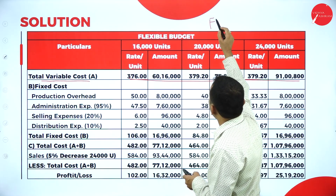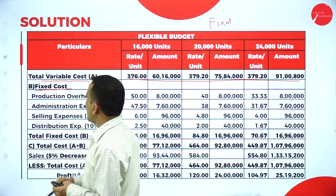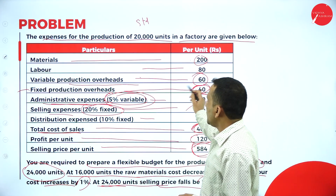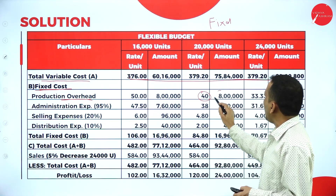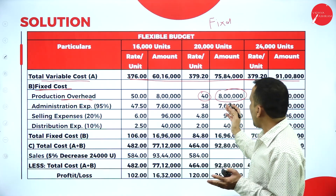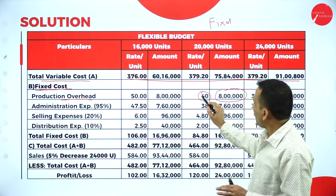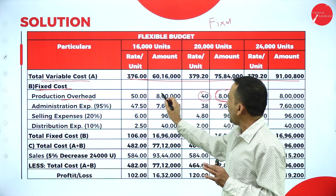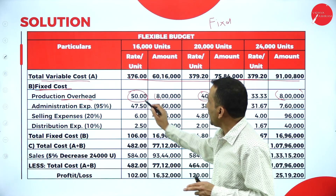Moving to fixed costs, we identify what falls under fixed. The fixed production overheads rate is given as 40 rupees. So 40 into 20,000 = 8 lakhs, and this 8 lakhs is constant for all capacities. For 16,000 units: 8,00,000 divided by 16,000 = 50 rupees per unit rate. For 24,000 units: 8,00,000 divided by 24,000 = 33.33 rupees per unit. The fixed amount remains 8 lakhs across all capacities.